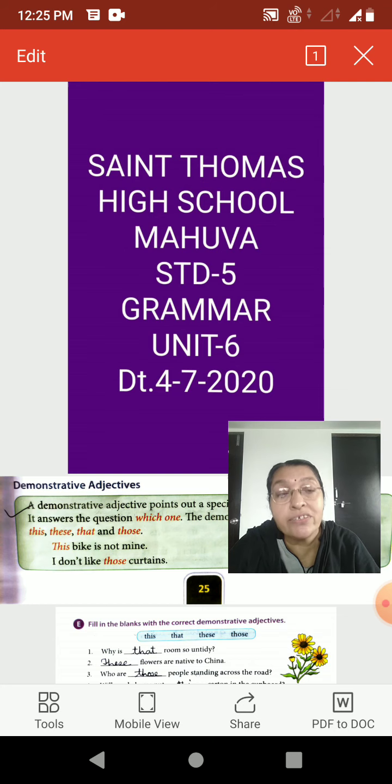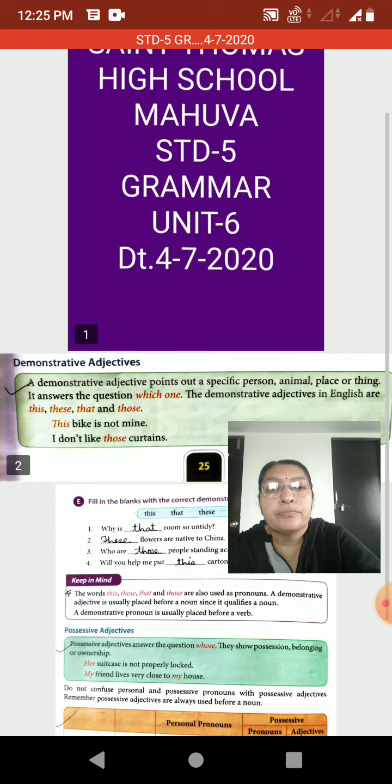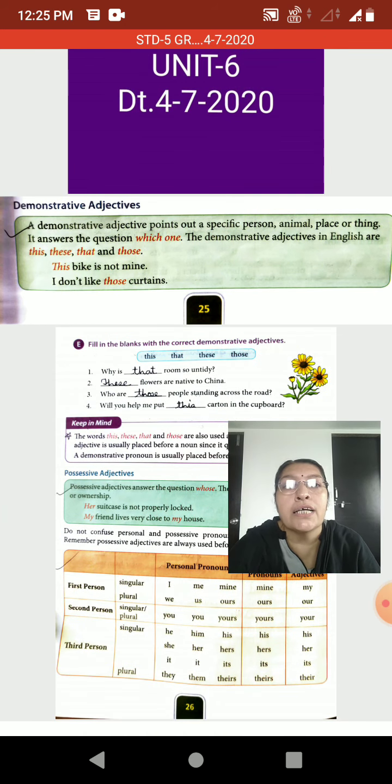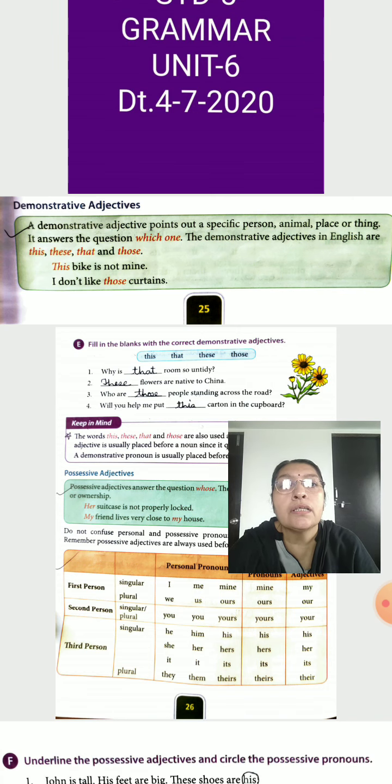Demonstrative Adjectives point out a specific person, animal, place or thing. They note down about particular person, animal, place or thing. It answers the question which one. The demonstrative adjectives in English are this, these, that and those. So, here given examples.